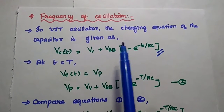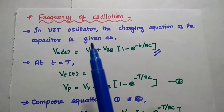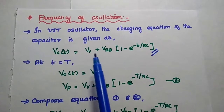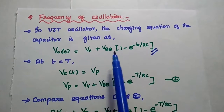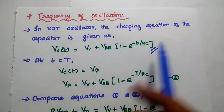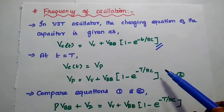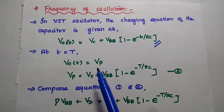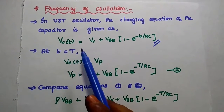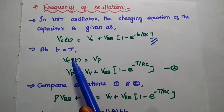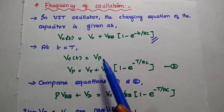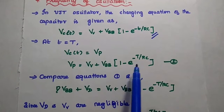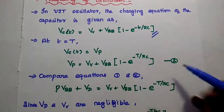Now we are going to derive the frequency of oscillation for this UJT oscillator. The charging equation of the capacitor is: Vc(t) equals VV (valley voltage) plus VBB into (1 minus e to the power of minus T by RC). Here we consider the time period T at which the peak voltage is reached, so VP equals VV plus VBB into (1 minus e to the power minus capital T by RC). Consider this as the second equation.